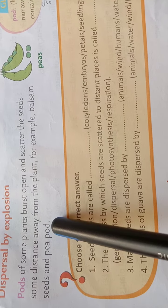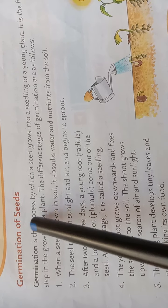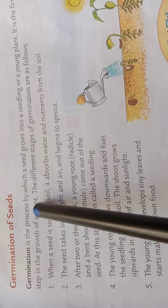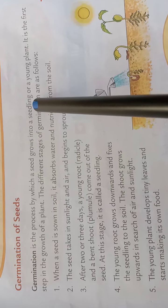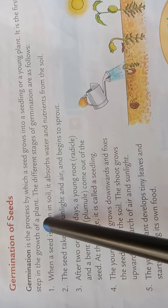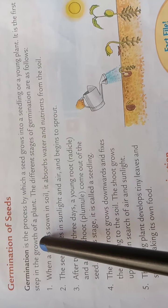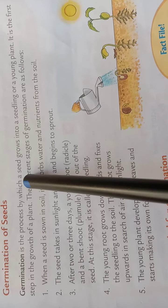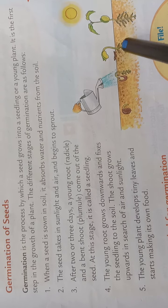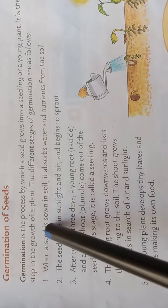Now next topic is germination of seeds. Students, this is a very important topic. Germination is the process by which a seed grows into a seedling or a young plant. It is the first step in the growth of a plant. The different stages of germination are as follows.